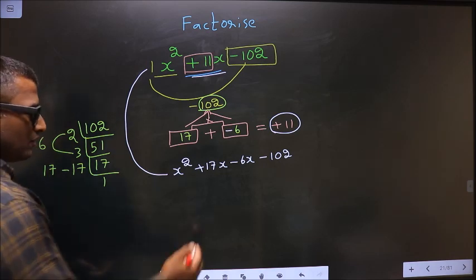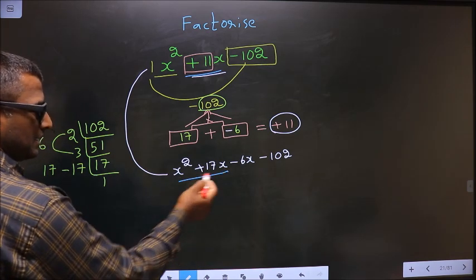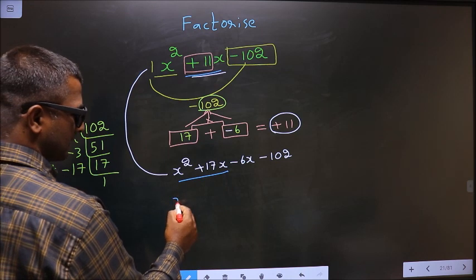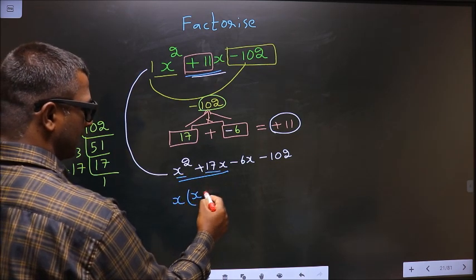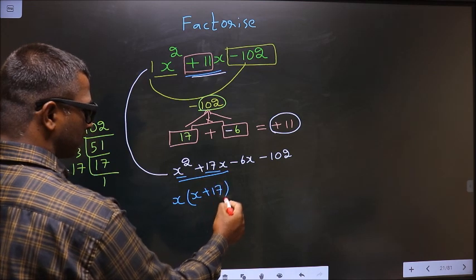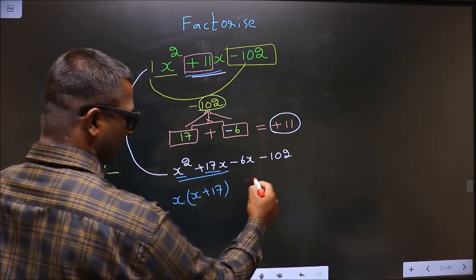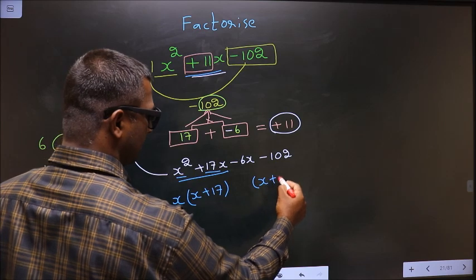Now what can be taken out common from these two terms is x. So here you are left with x and here plus 17. Whatever you have got here, you should get the same thing here.